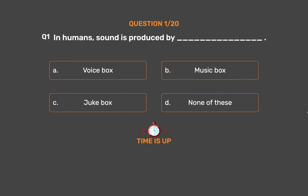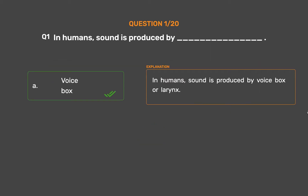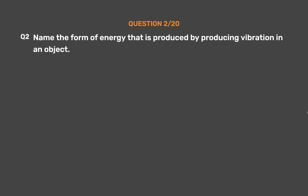The correct answer is Option A, Voice box. In humans, sound is produced by voice box or larynx.